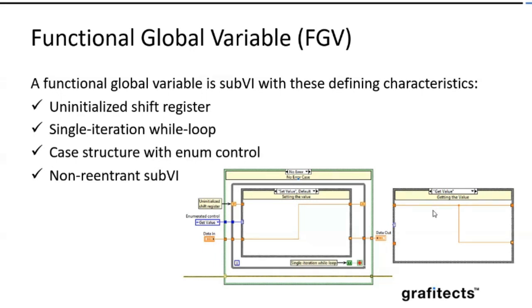And the main important thing is functional global is a non-reentrant VI. This VI should be, what we are using as FGV, must be a non-reentrant. You can choose this from VI properties and execution tab where you can choose this option. And this execution mode ensures that only one instance of the subVI exists in the target, and multiple instances of subVI all refer to the same stored value. It won't create a separate data buffer as like a local variable. So that is a more advantage.